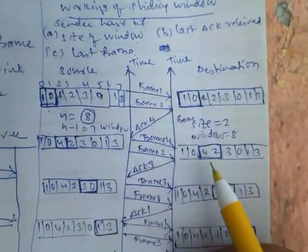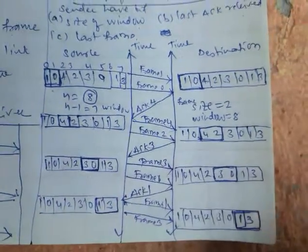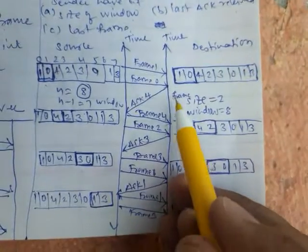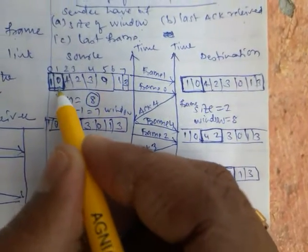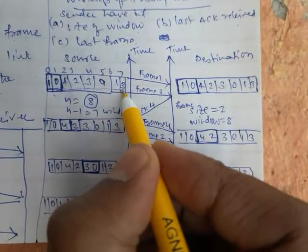Now here you can see the diagram. From the given diagram, the given frame size is 2 and window size is 8. That means total window size is 8, so at a time how many frames are you going to send? 2 frames.